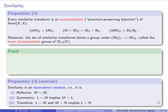Similarity is an equivalence relation — it is reflexive (everything is similar to itself, conjugate by the identity), symmetric (if L is similar to M, conjugate by S⁻¹ to go backwards), and transitive (if S takes L to M and T takes M to N, then TS takes L to N).